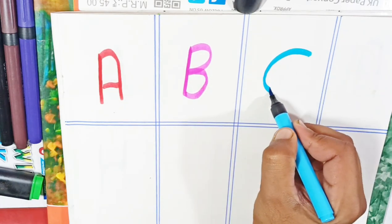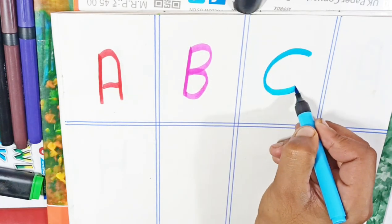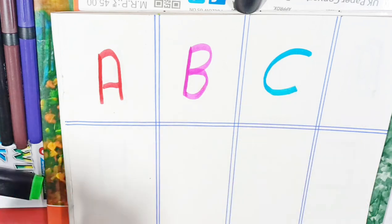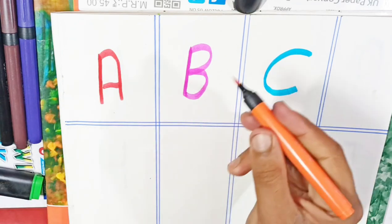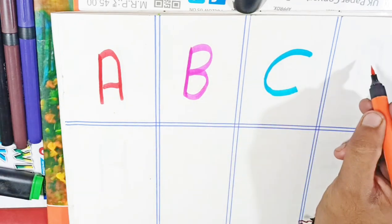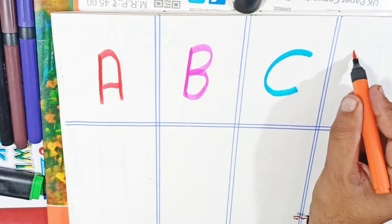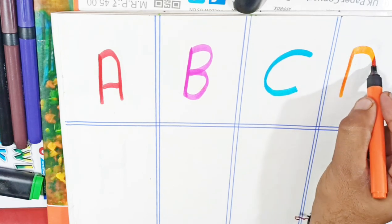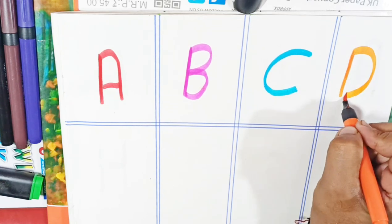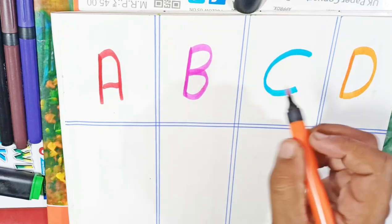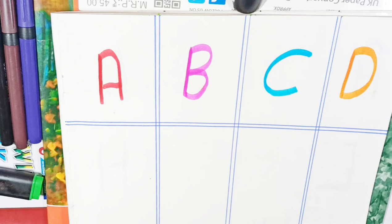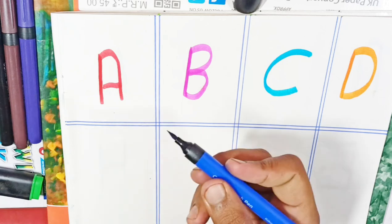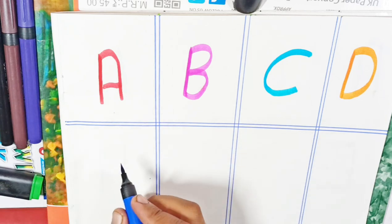C, C for cat, orange color. D, D for dog, blue color.